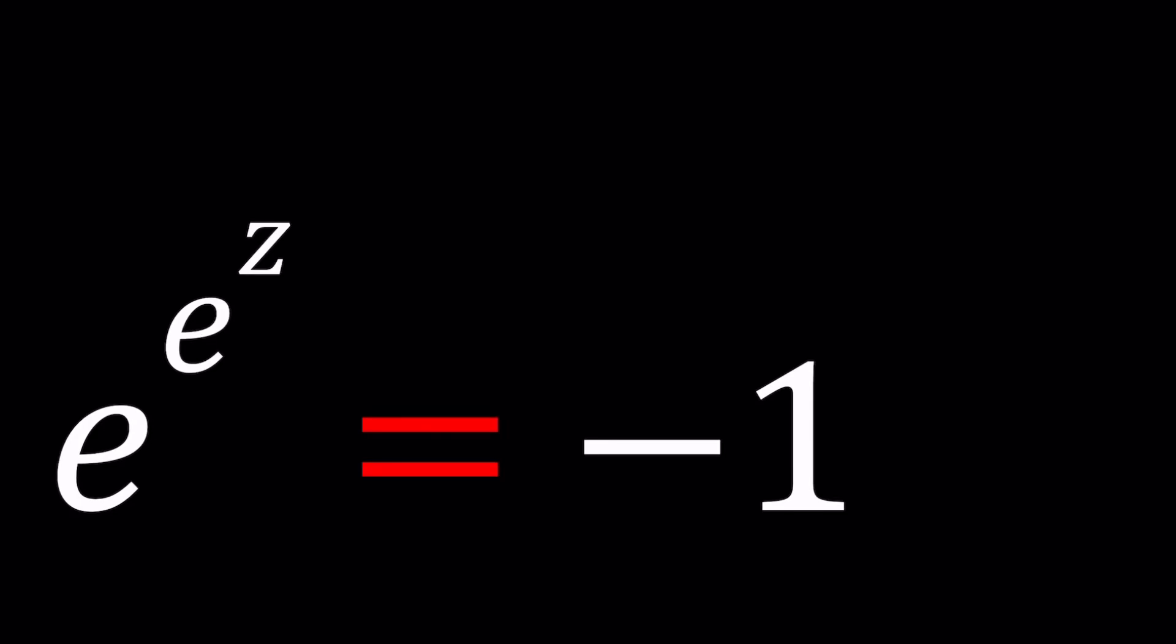Hello everyone. Welcome to A plus B I. This channel is all about complex numbers, and in this video we're going to be solving a very exponential, very complex equation. We have e to the power e to the power z equals negative one.